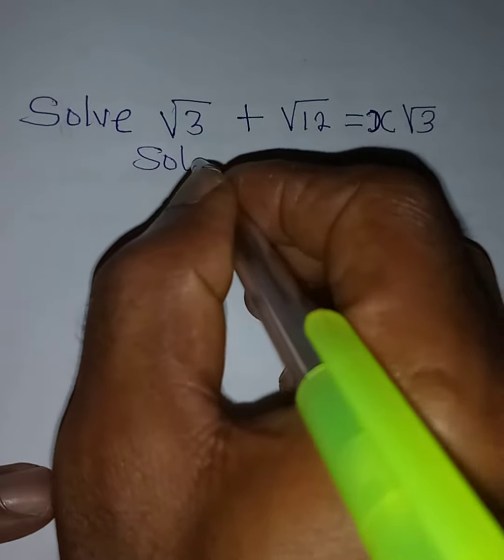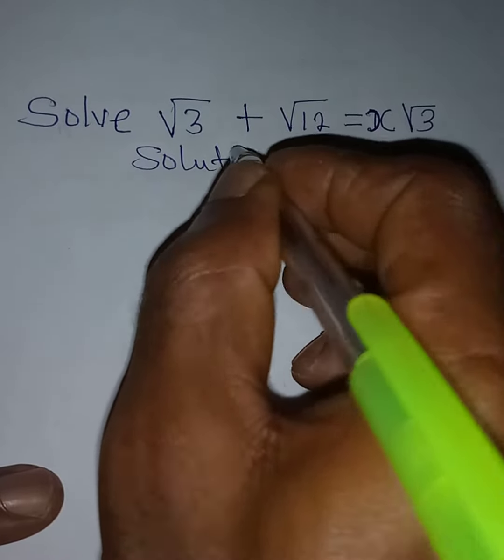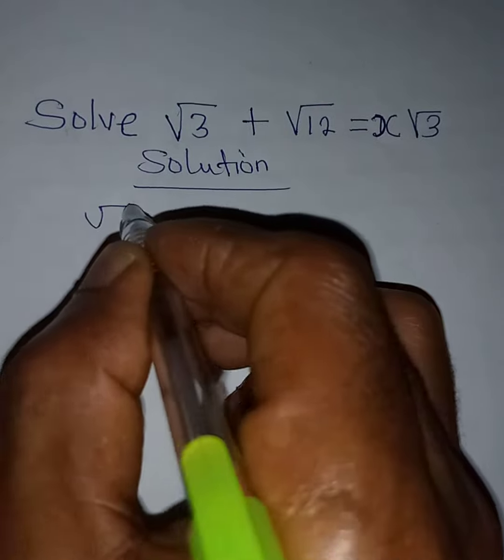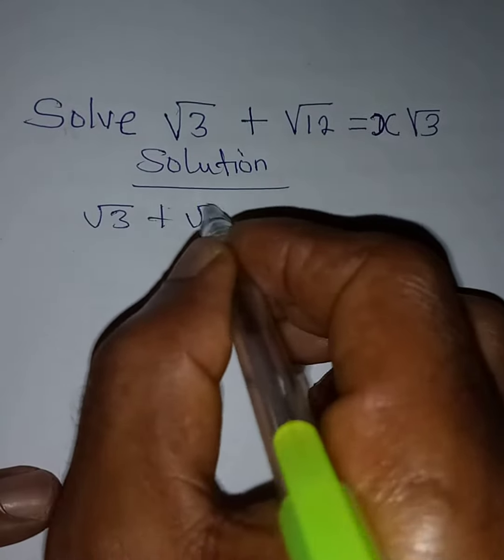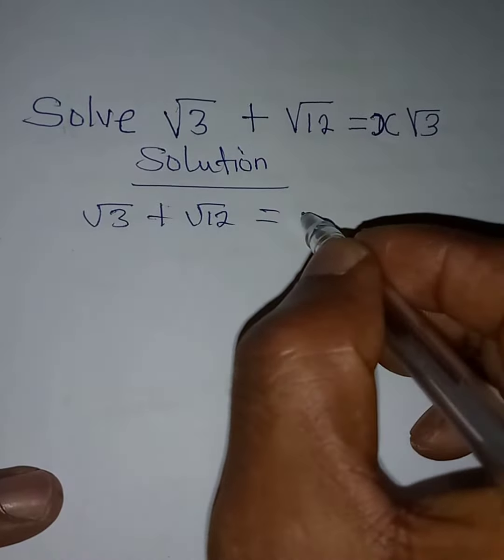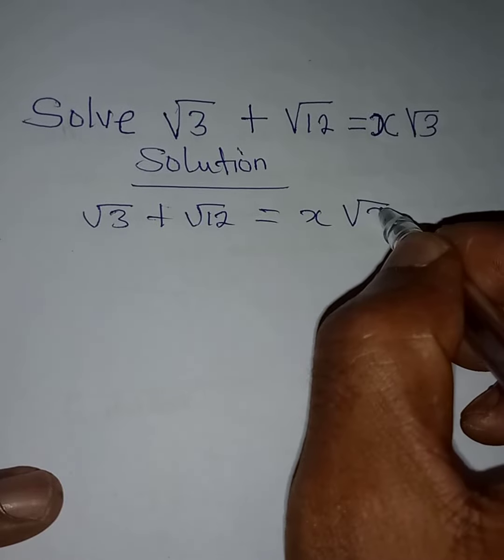Hello everyone, let's solve this problem very quickly. We have √3 + √12 = x√3.